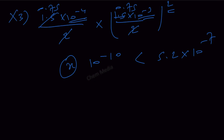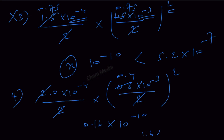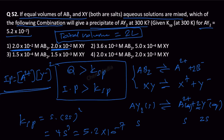For option 4: (2 × 10⁻⁴)/2 × [(0.8 × 10⁻³)/2]² = 10⁻⁴ × (0.4 × 10⁻³)² = 10⁻⁴ × 0.16 × 10⁻⁶ = 1.6 × 10⁻¹¹, which is less than the Ksp. Therefore option 4 is also wrong. This means option 1 is correct — only option 1 gives a precipitate of AY₂.